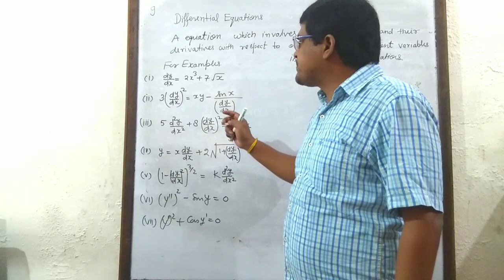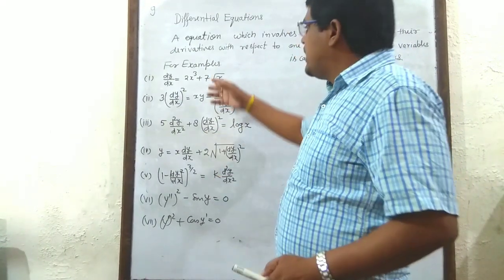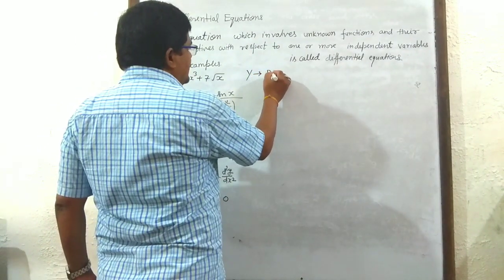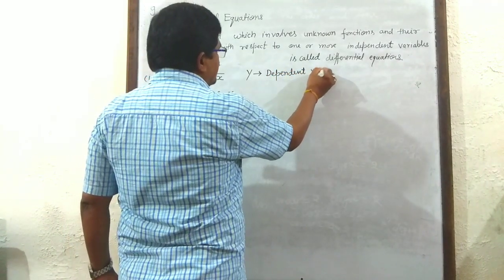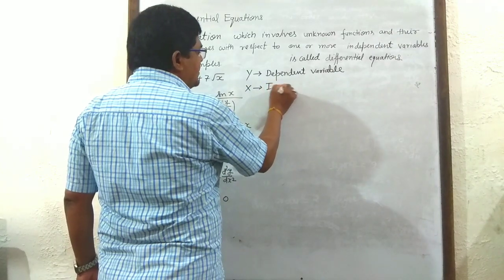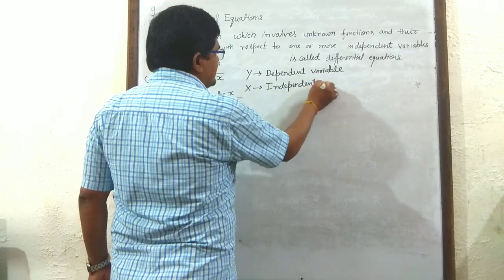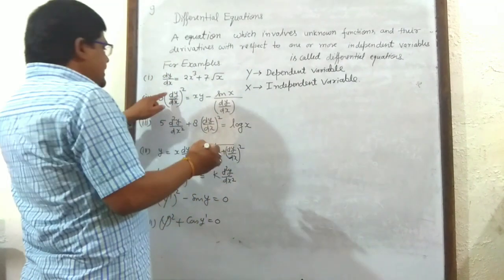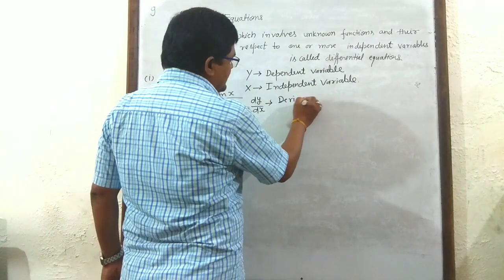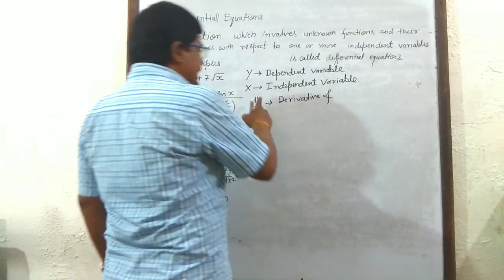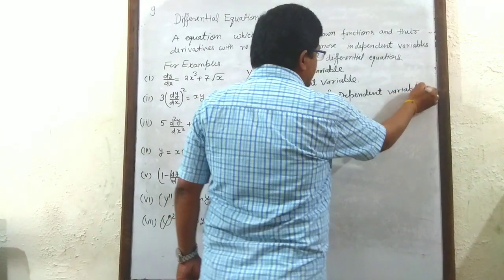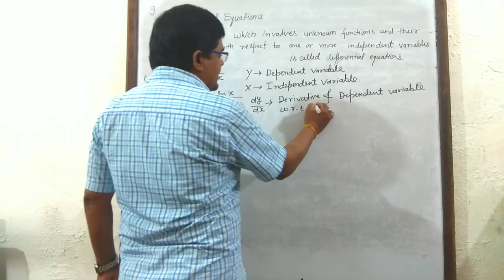In these examples, students, there are two types of variables: dependent variables and independent variables. Y is the dependent variable, and x is the independent variable. And dy/dx is the derivative of the dependent variable with respect to the independent variable.